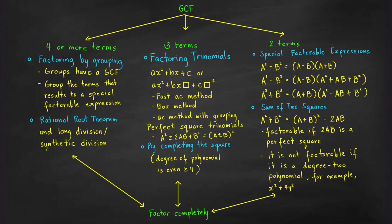When you're factoring a polynomial, the first thing that you need to do is to find a common factor from all the terms. And if there is such a common factor, factor out the greatest common factor, which is the GCF.